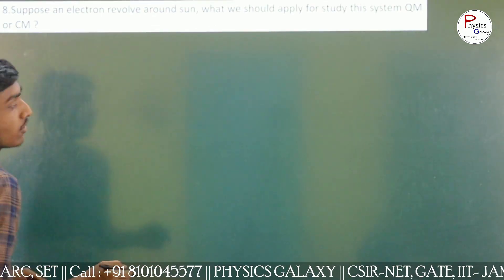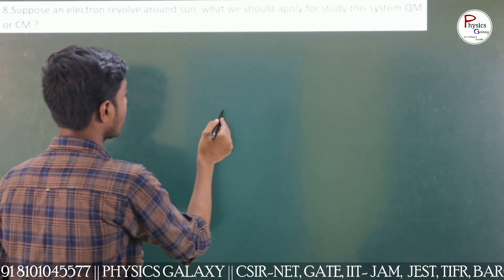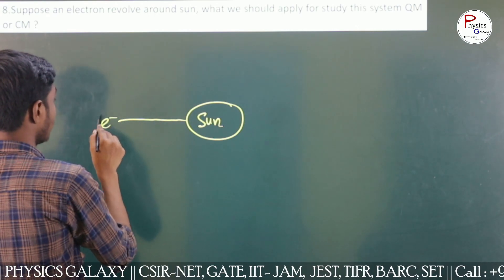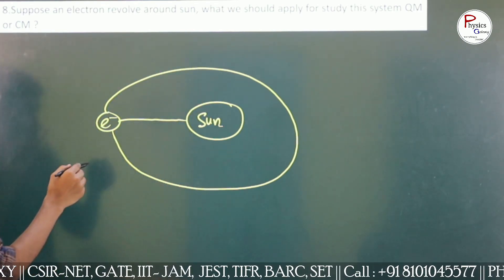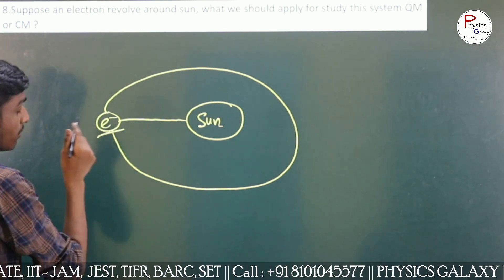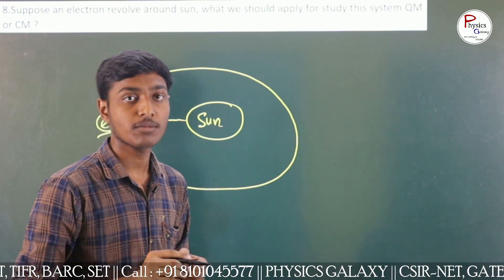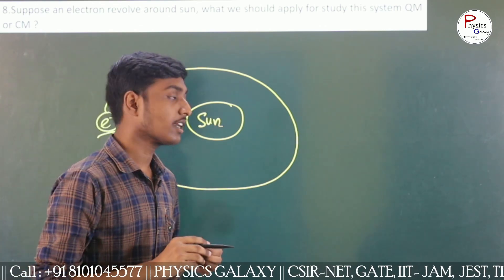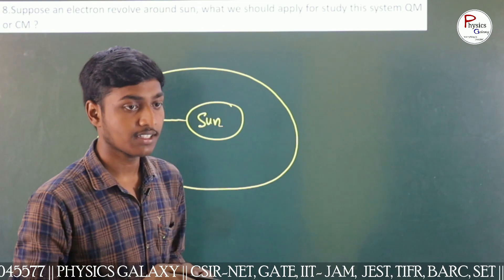Next question: suppose an electron revolves around the sun — for studying this system, should we apply quantum or classical mechanics? I said if we study the electron's motion, we apply quantum mechanics, because the electron is a quantum particle. Then they said: if we replace the electron with a rock, what happens? I said then we apply classical mechanics.